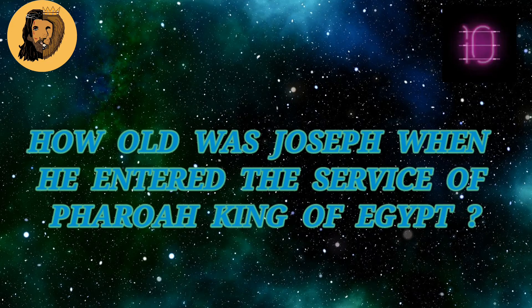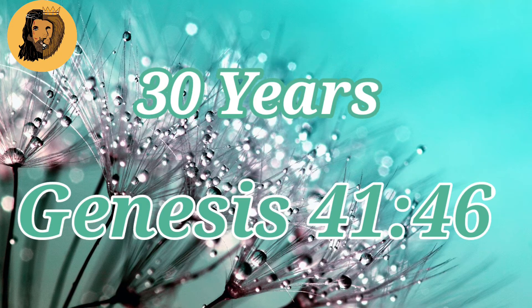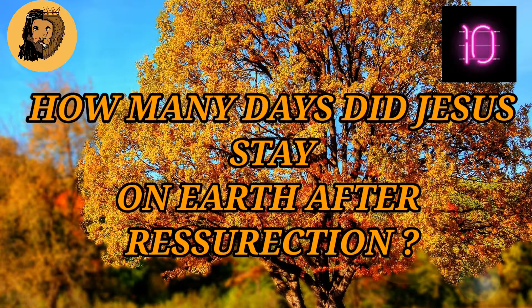How old was Joseph when he entered the service of Pharaoh king of Egypt? Thirty years. Genesis chapter 41 verse 46.